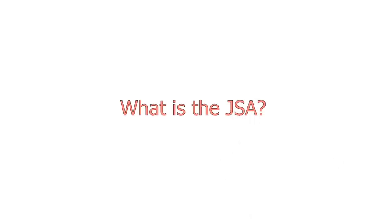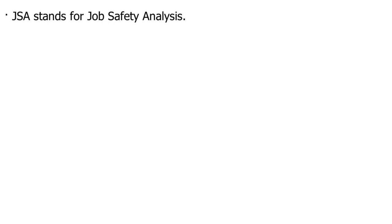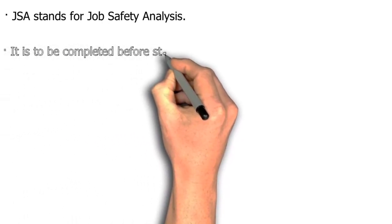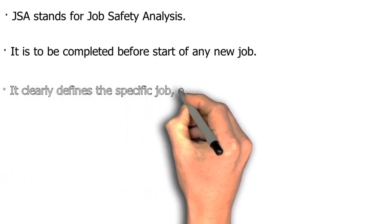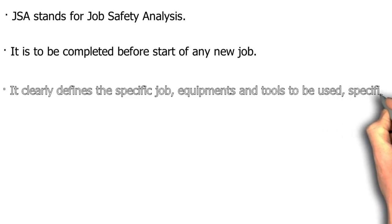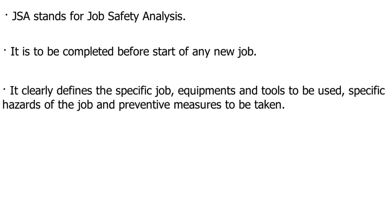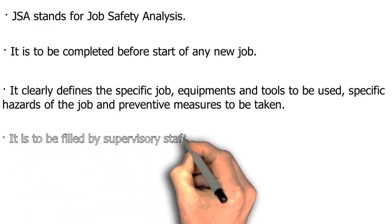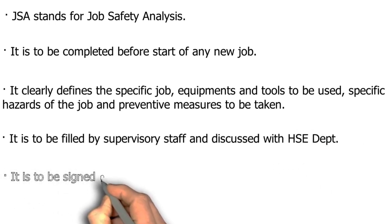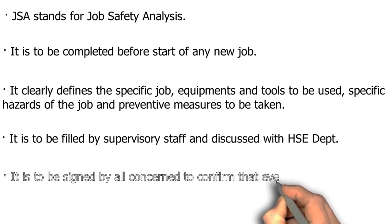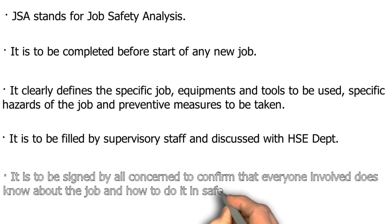What is JSA? JSA stands for Job Safety Analysis. It is to be completed before the start of any new job. It clearly defines the specific job, equipment and tools to be used, specific hazards of the job, and preventive measures to be taken. It is to be filled by supervisory staff and discussed with the HSE department. It is to be signed by all concerned to confirm that everyone involved knows about the job and how to do it in a safe way.